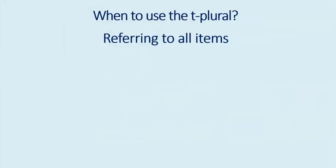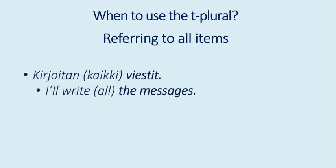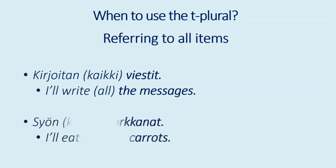T-plural is also used when referring to all items. For example, kirjoitan viestit — I'll write the messages. Syön porkkanat — I'll eat the carrots. If you use the T-plural, it implies that you are referring to all items, meaning you'll write all the messages and eat all the carrots.